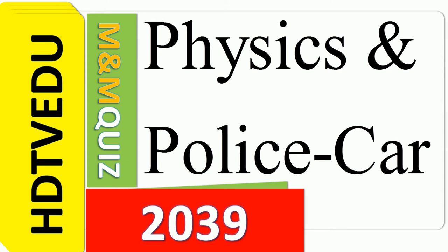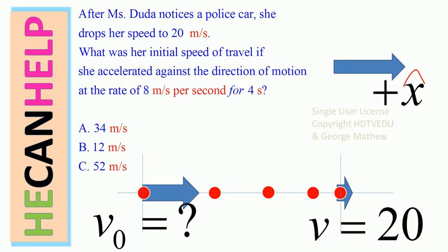Physics and police car. M&M quiz 2039. After Ms. Duda notices a police car, she drops her speed to 20 meters per second. What was her initial speed of travel if she accelerated against the direction of motion at the rate of 8 meters per second per second for 4 seconds? Positive x is defined as to the right. Assume uniform acceleration.